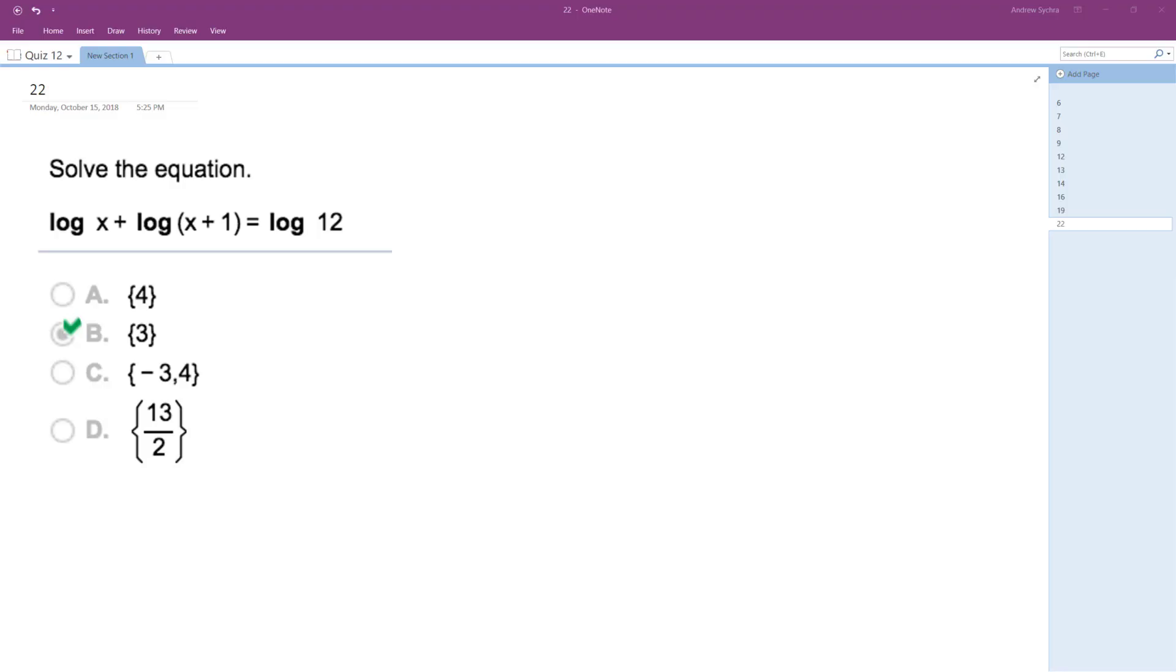Alright, so we want to solve the following problem. When combining logarithms, we add exponents, which is the same thing as multiplying. So inside we get x times the quantity x plus 1 equals log of 12.